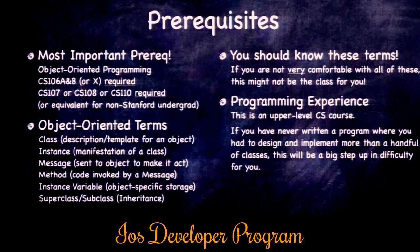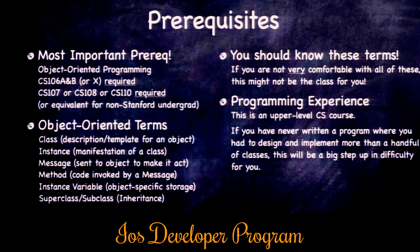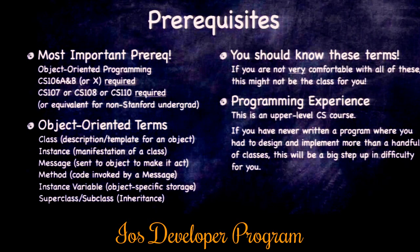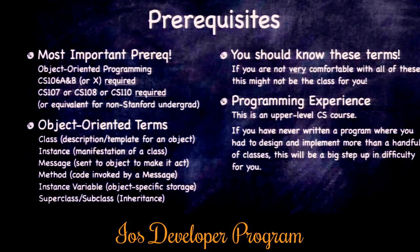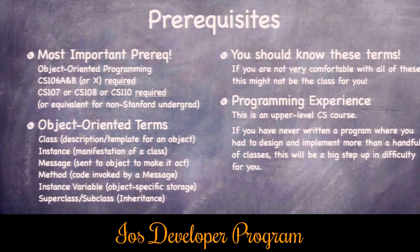Most importantly, you've got to really be comfortable with object-oriented programming. Terms like message, instance variable, superclass, and subclass — if you don't know these terms like the back of your hand, it's going to be hard. iOS 7 is completely object-oriented; the whole structure of the design is object-oriented. Take CS106A and B equivalent first, get a little more programming experience, and then you're good to go.